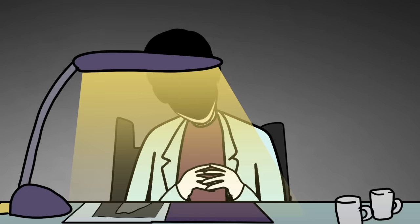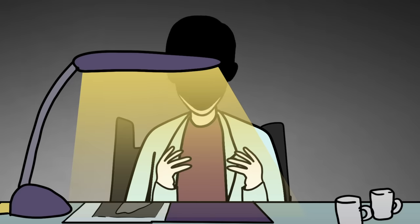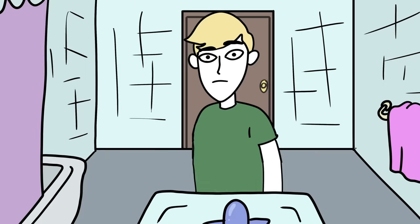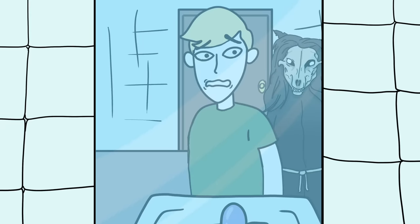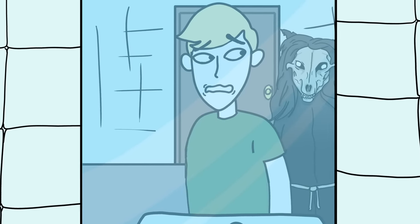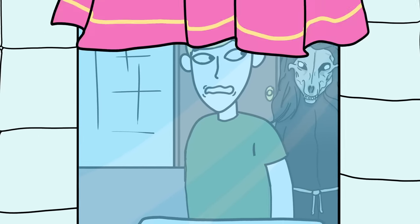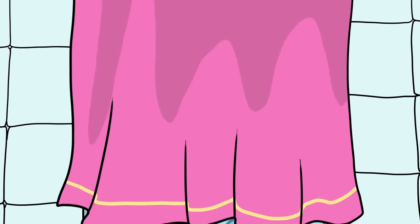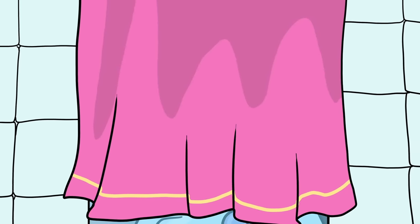Then, things got even worse. The creature started appearing to William and Sarah in the real world. William, as it turns out, was the lucky one, as SCP-1471-A primarily appeared to him in reflective surfaces like mirrors, which he could cover with a curtain when he didn't want to see the strange dog-skull face with its toothy grin staring back at him.